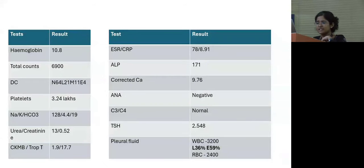On routine investigations, hemoglobin was noted to be 10.8, WBC counts and platelets were noted to be adequate. Mild hyponatremia was noted. Urea creatinine was normal. CK-MB Troponin I was slightly elevated, but there was no serial rise in the titers.